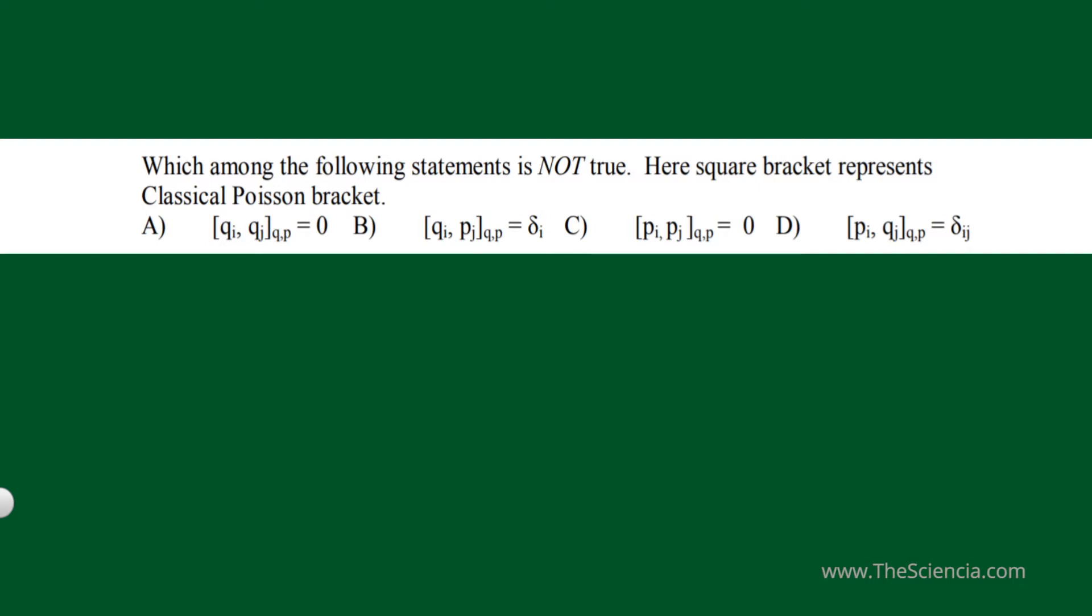Now check option B and option D. I told you the Poisson bracket with a variable and its conjugate will be equal to delta ij. So option B is correct, and option D is not true.